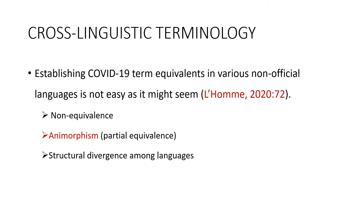Talking about cross-linguistic terminology, Meworm 2020 warns that finding equivalents for standardized terms in minority or unofficial languages is not easy. He identifies three key challenges: first, an-equivalence, where there is a lack of a concept in the target language, making it difficult to find an equivalent term; second, anamorphism, whereby there is only partial equivalence with no one-to-one match between source and target terms; and third, structural divergence among languages, which also poses difficulties for those working in cross-linguistic terminology.